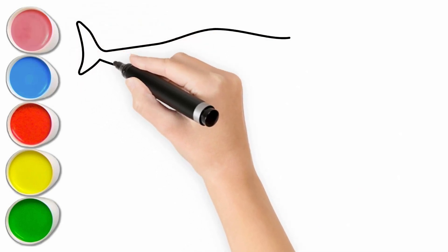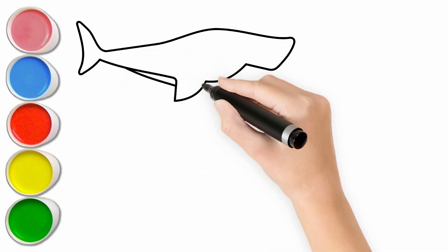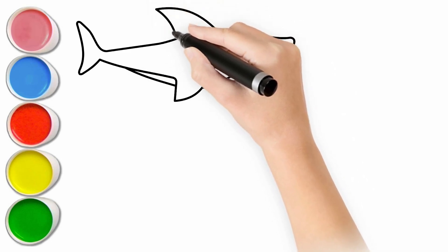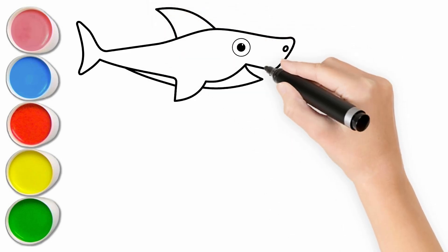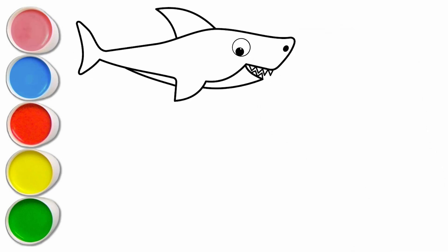First, I'm drawing the daddy shark. Daddy shark has very sharp teeth. Look, daddy shark is moving.